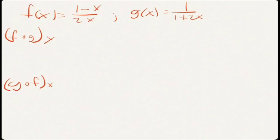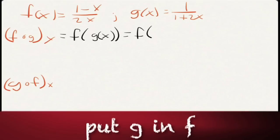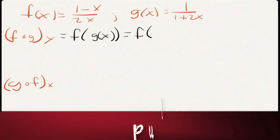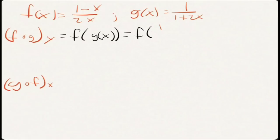We'll talk about the domain in a moment next video. But now what we want to do is we want to first look at f of g of x. That is literally f of g of x. Well, what do we do? We take f and inside f we put g. What's g? That's 1 over 1 plus 2x.